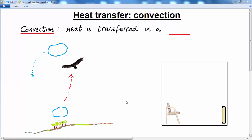In this lesson, we're going to continue to look at heat transfer. This time, we're going to look at convection. Convection is the process by which heat is transferred in a fluid. By fluid, we mean that the material can be either a liquid or a gas.